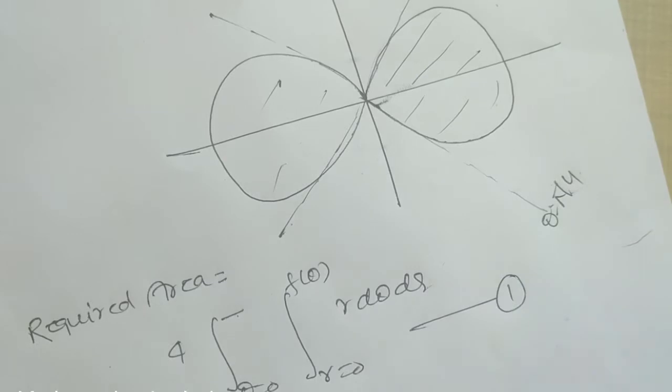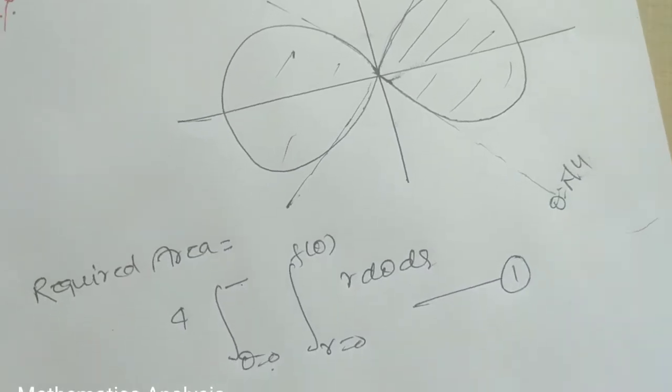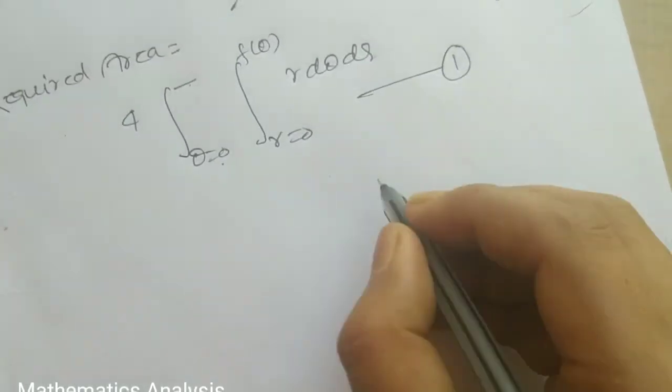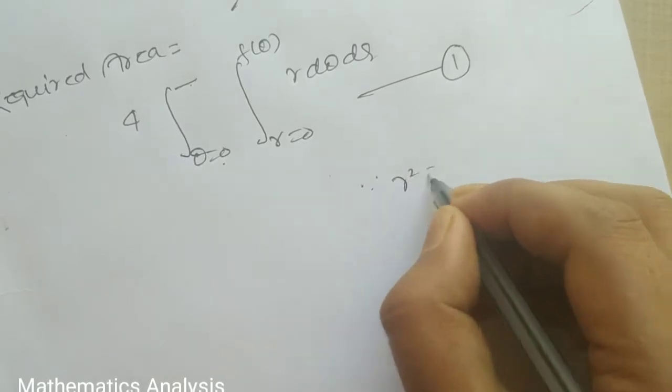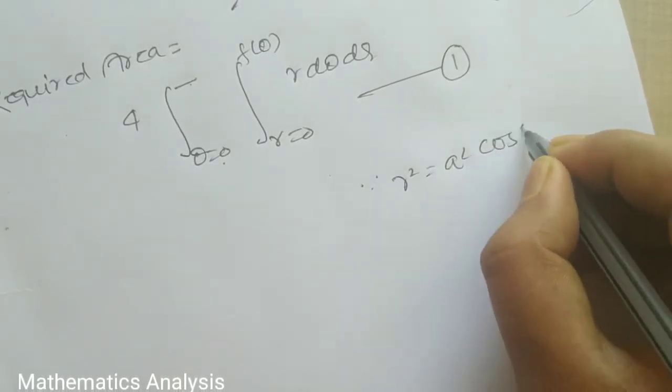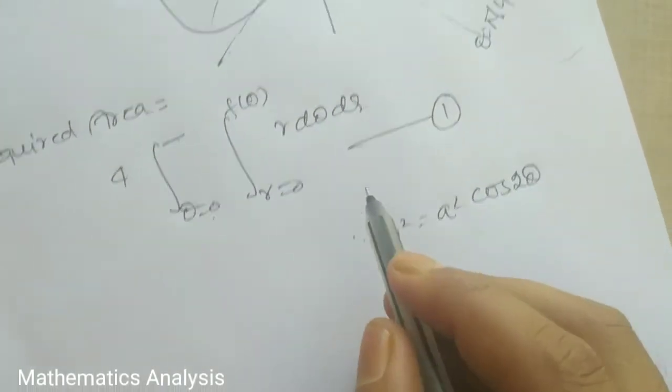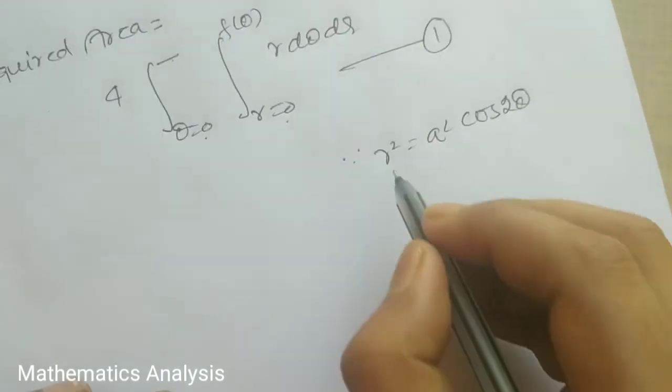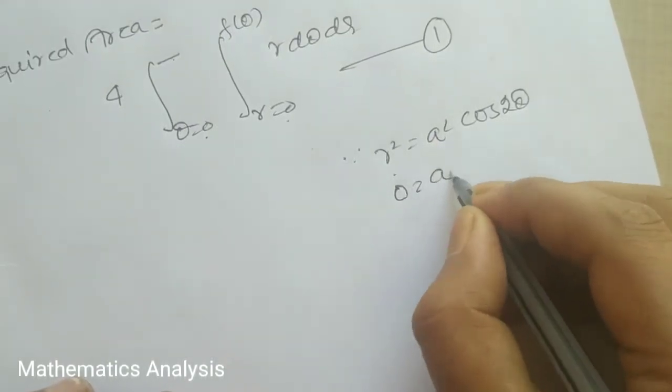Where is the theta? I have told you about π/4. How did it come? What is the curve? The curve is r squared equals a squared cos 2θ. And the r value starts from r equals 0. Put it here.